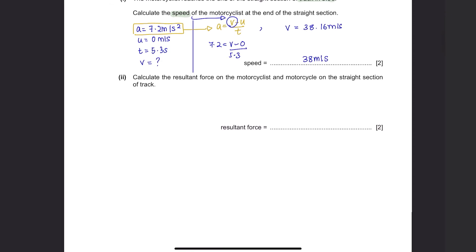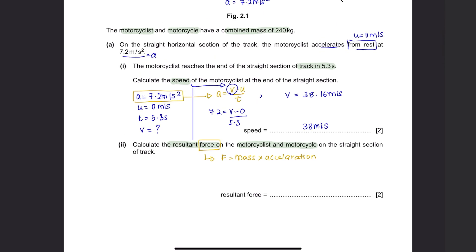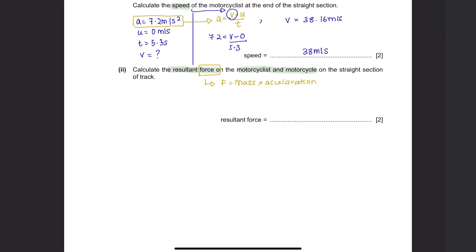Part 2: Calculate the resultant force on the motorcyclist and motorcycle on the straight section of the track. The formula to calculate force is F equals mass times acceleration. Both the combined mass and the acceleration are already given in the question. Substituting the values gives a resultant force of 1728 newtons, which is approximately 1700 newtons.